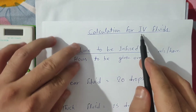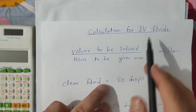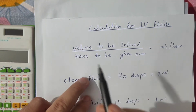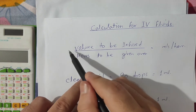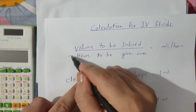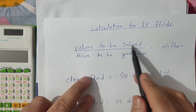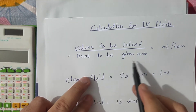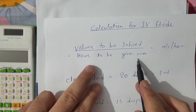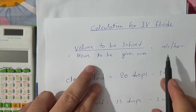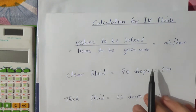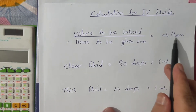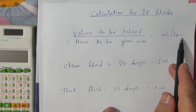Our topic is calculation for IV fluids. We'll use this formula: volume to be infused divided by hours to be given over, and the unit will be milliliters per hour.